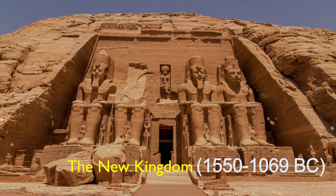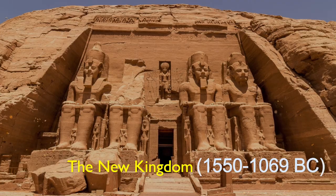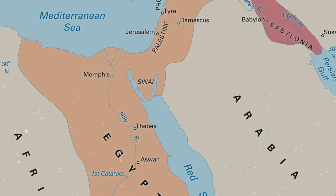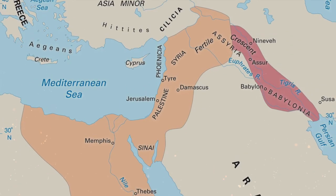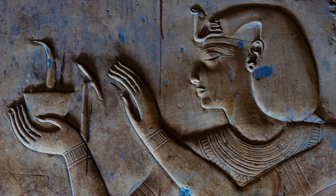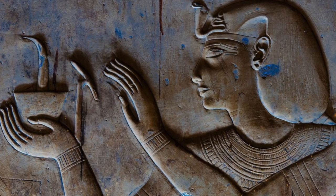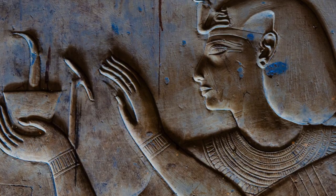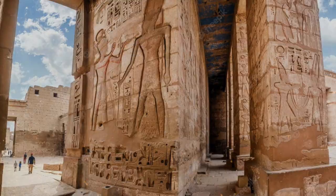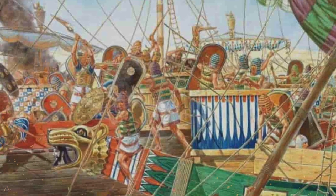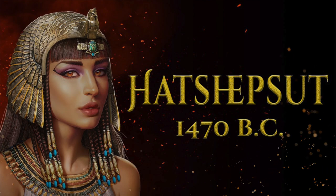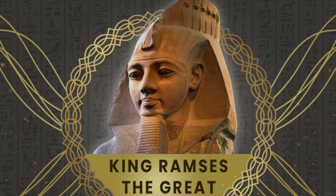The New Kingdom period marked a significant period in Egyptian history. It was a time of great expansion and military conquest, during which the Egyptian empire grew to its largest size. It was also a time of great artistic and cultural development, during which some of the most iconic structures and pieces of art were created. The New Kingdom saw significant expansion particularly during the reign of pharaohs such as Hatshepsut and Ramses II.